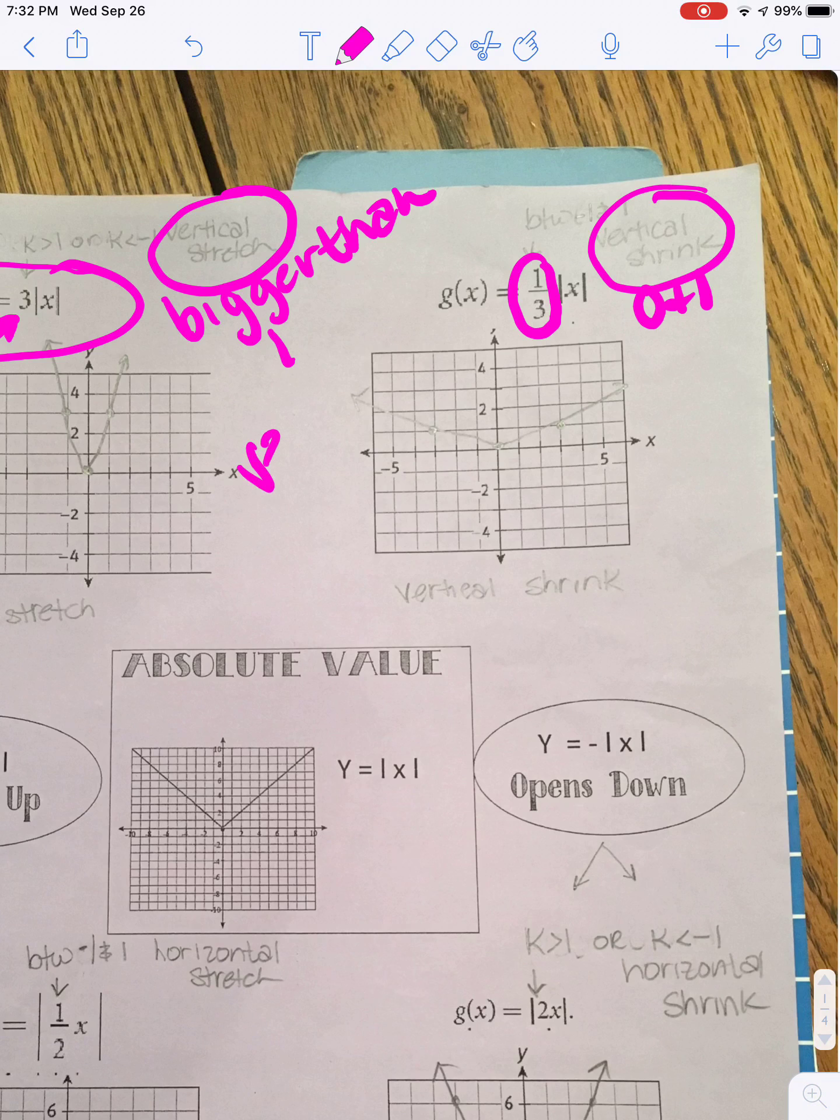The big thing, remember, that we talked about is that it's a vertical change if the number's outside the absolute value.